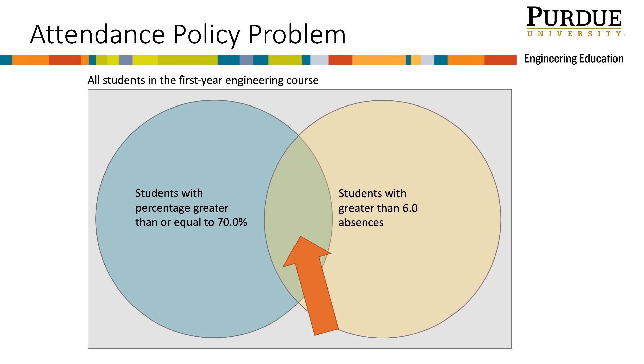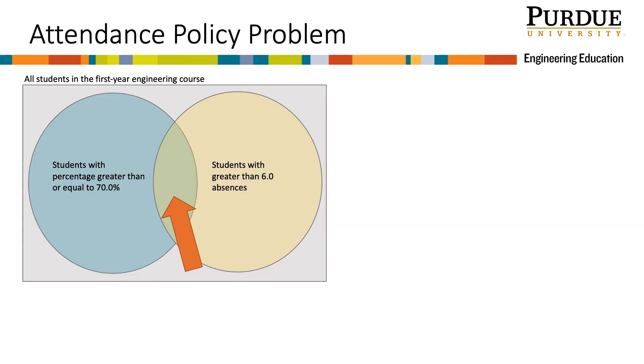Notice that the students that are in the overlapping circles are the ones that will be affected by the policy. These students will have enough points to pass, but will have been absent too much to pass. Now let's start to convert this to a flowchart.